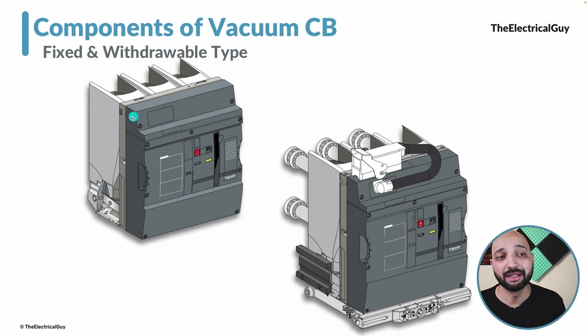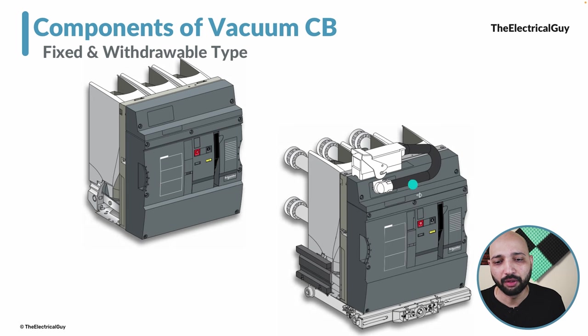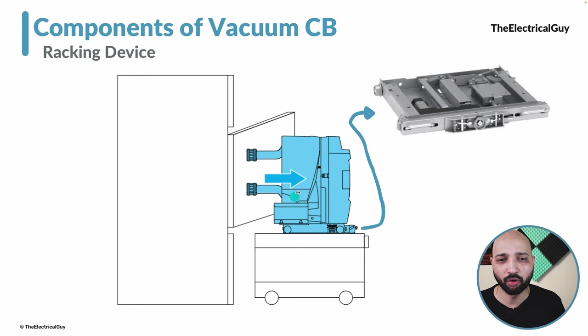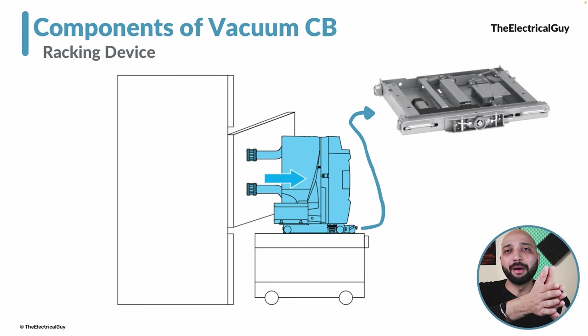The first image shows the fixed type circuit breaker — you put it in the panel and it remains in that position. The second one is the withdrawable type circuit breaker. The difference is that the arms of the withdrawable circuit breaker are longer, and a dedicated racking trolley is provided. Whenever we need withdrawable type functionality, we need to use a racking device or racking trolley. You will put the circuit breaker on this racking device and roll it back inside the panel, or take it out as needed. This is a very important part when withdrawable functionality is required, and it also has a lot of interlocks.